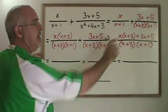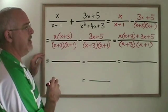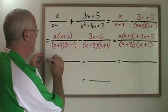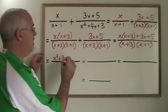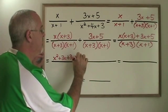Now I'm going to simplify this expression in the numerator. x times the binomial x plus three gives x squared plus three x and then I also write in my plus three x plus five.